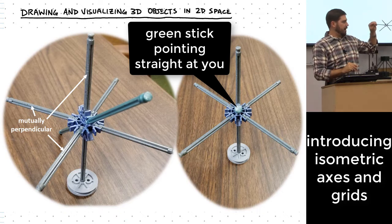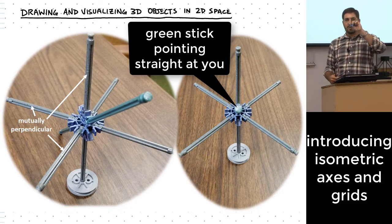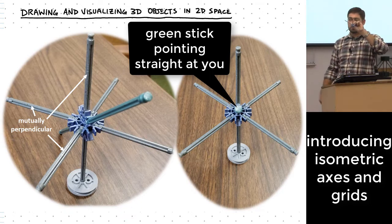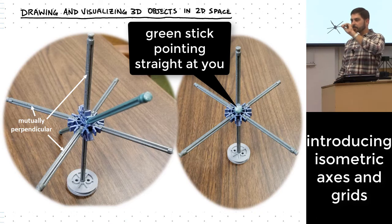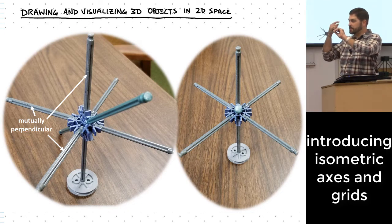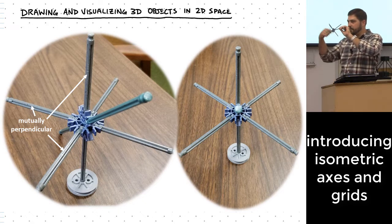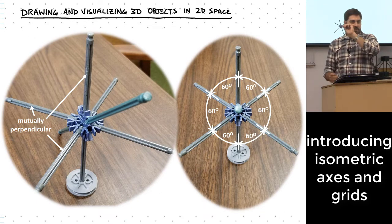If you look straight down the end of the green stick, especially if you close one eye to eliminate your ability to perceive depth, it makes it even more clear. It looks like three lines, and if you see what those three lines look like in this two-dimensional space, there's going to be 60 degrees between each one of them.